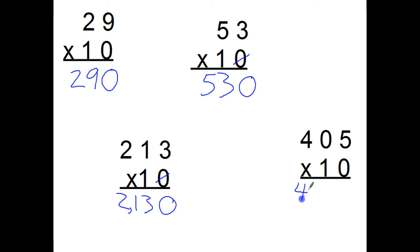405 times 10, write down my 405, put a zero at the end, count back 3 spots for my comma, 4050.